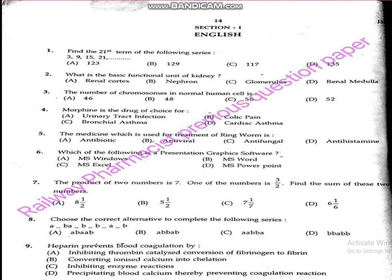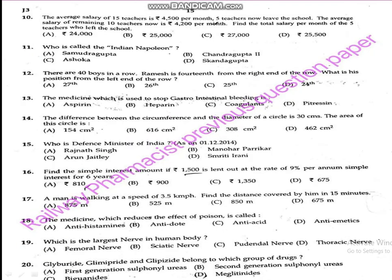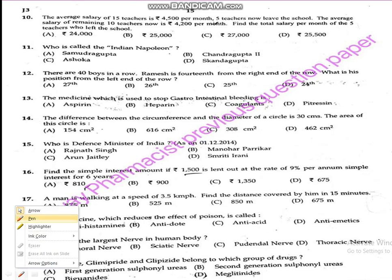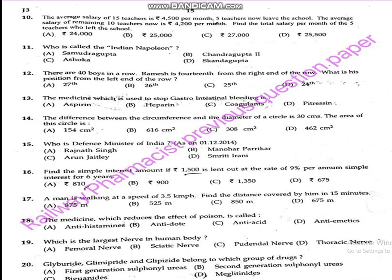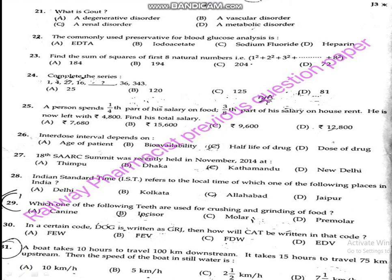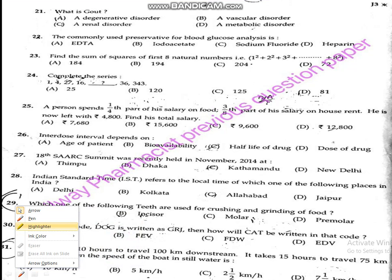Now we go directly to the question paper. This is the first page, consisting of questions number 1 to 9. We will show you the question paper first, then solve each question one by one with short notes and explanation. The second page contains questions 10 to 20, and the third page consists of questions 21 to 31.